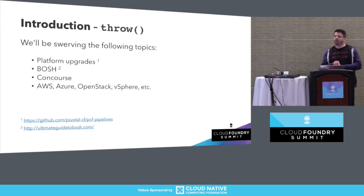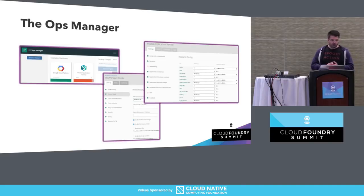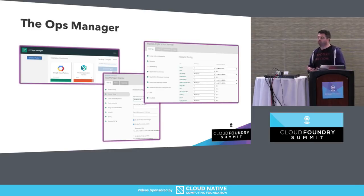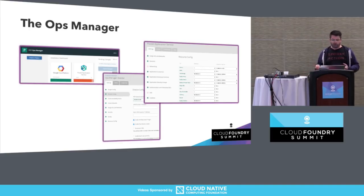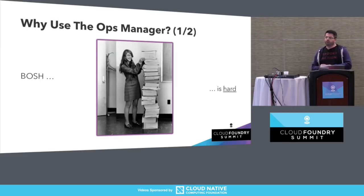I'm also not going to talk about other IaaS — the whole point of having the platform is that we are abstracted from that. This is a familiar view of the Ops Manager installation dashboard. It has things that are green and things that are orange, and our task is to turn orange things green so we can hit the big blue button. It's very heavily mouse-and-keyboard-oriented, but it does allow you full configuration over the tiles, which we download from Pivotal Network.